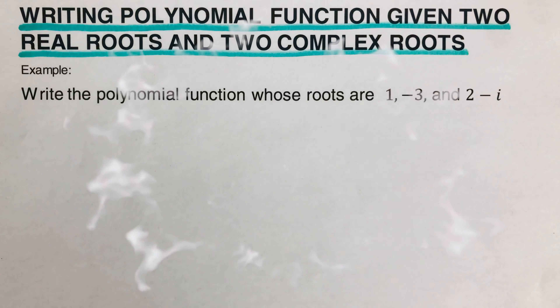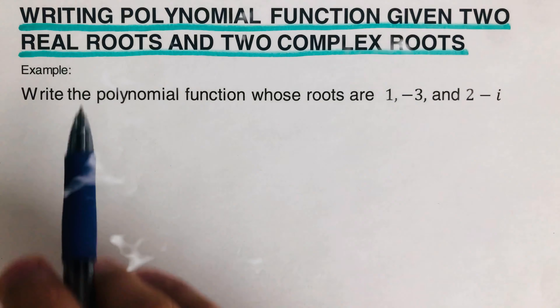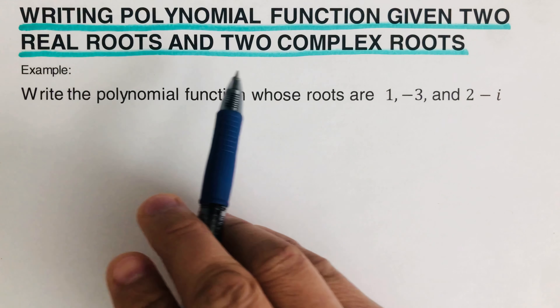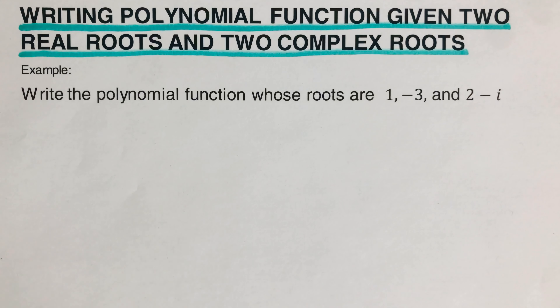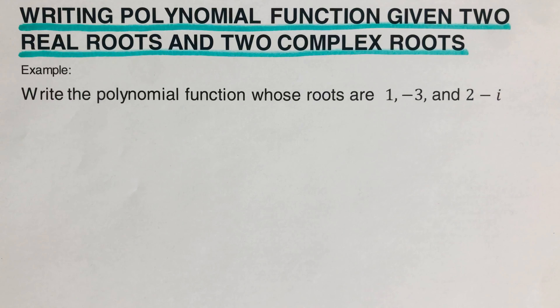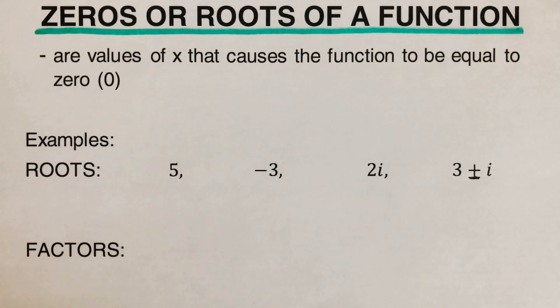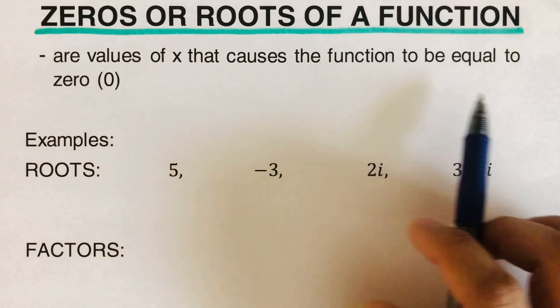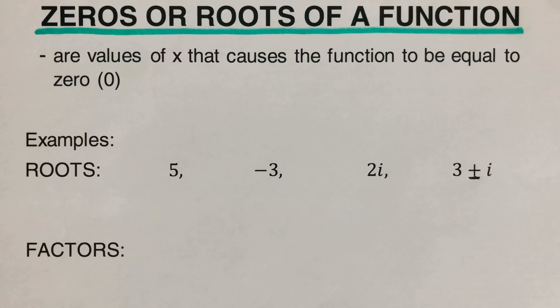Hello everyone. In this video we will be writing a polynomial function given two real roots and two complex roots. Before we go through this example, let's have a review on zeros or roots of a function. Zeros or roots of a function are values of x that cause the function to be equal to zero.